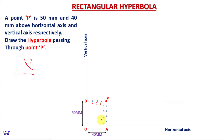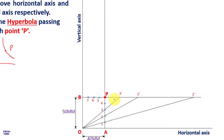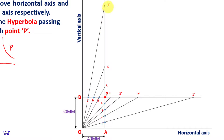From point O, draw a line passing through point one, extending to meet the BP extension line — name that point one dash. In the same way, from point O draw a line through point two, name it two dash; through three, name it three dash; through four, name it four dash. Draw a line from O through five meeting the vertical line — name it five dash. Similarly, lines through six and seven give points six dash and seven dash.